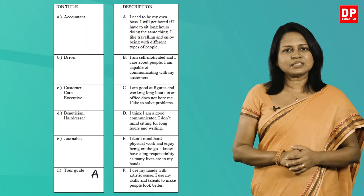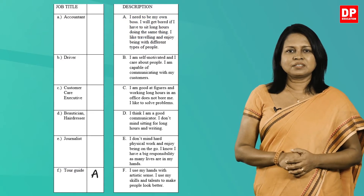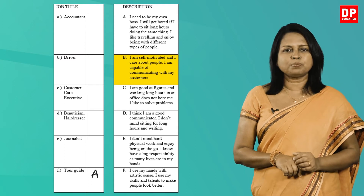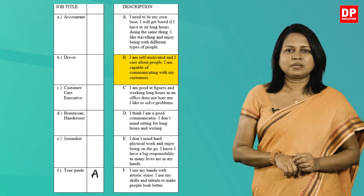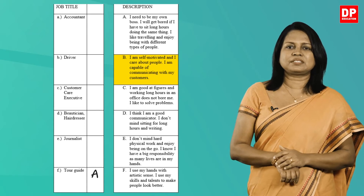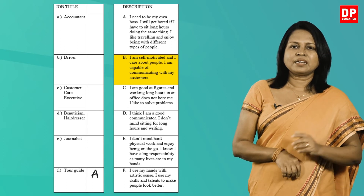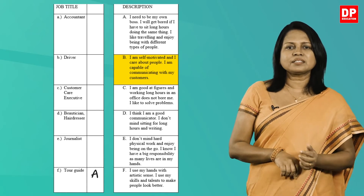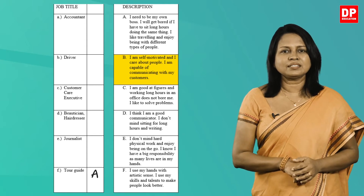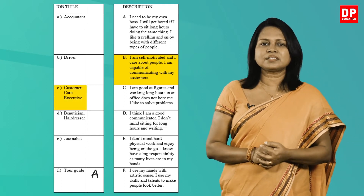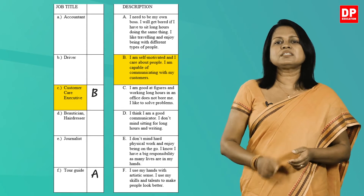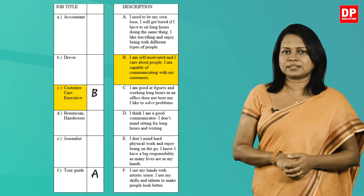Look at the second description: I'm self-motivated and I care about people. I'm capable of communicating with my customers. As the speaker says he cares about people, you can understand that he is a customer care executive. So write B against the customer care executive.